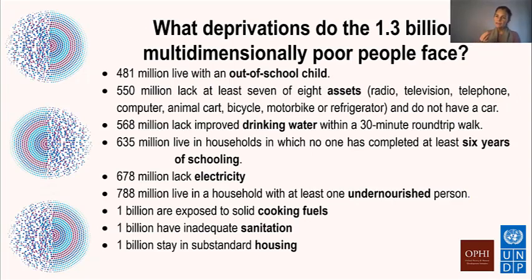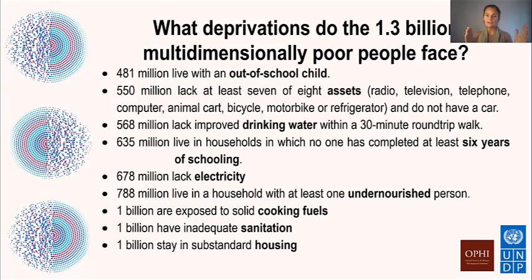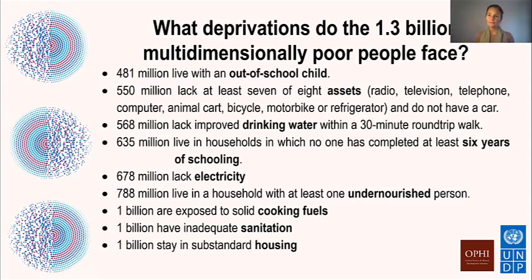When we say multidimensional, we really mean it. Of these 1.3 billion people, 1 billion don't have clean cooking fuel, 1 billion lack sanitation, 1 billion live in substandard housing, 788 million share their house with at least one undernourished person, and half cannot turn on the light when darkness falls. These are interlinked deprivations that require concerted, multi-sectoral integrated policies to bring change.